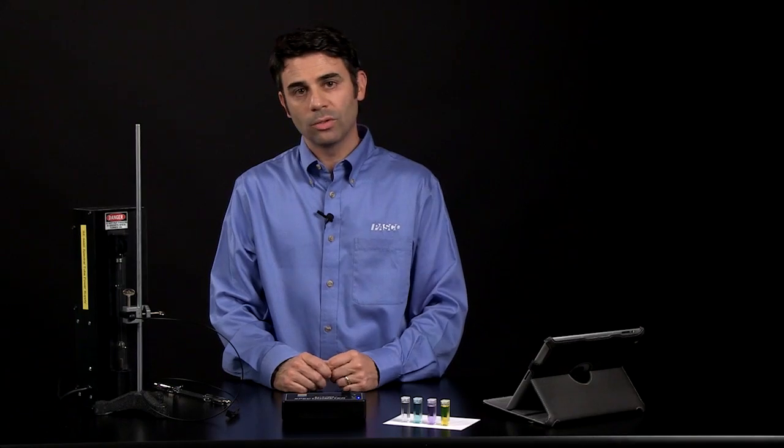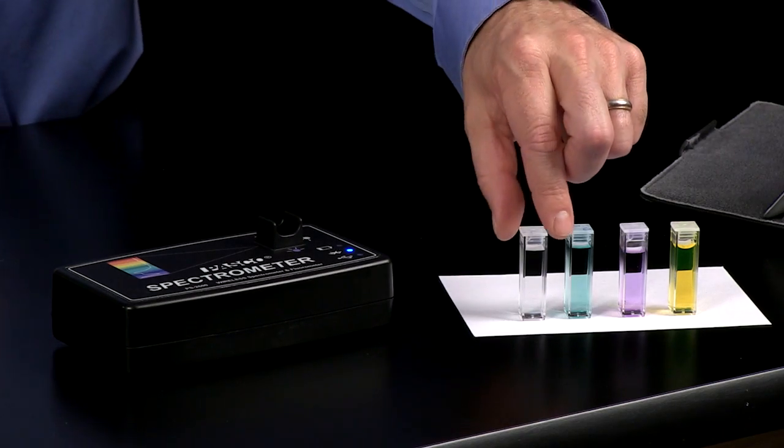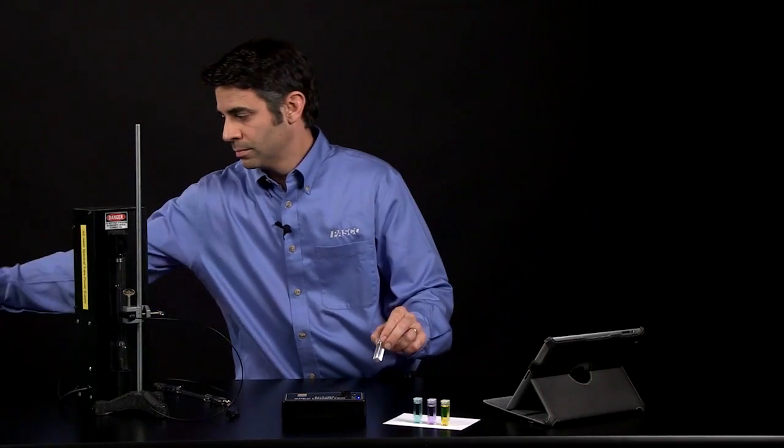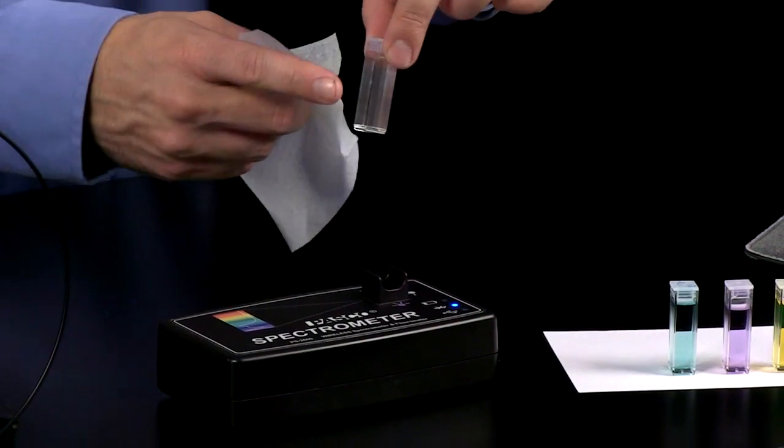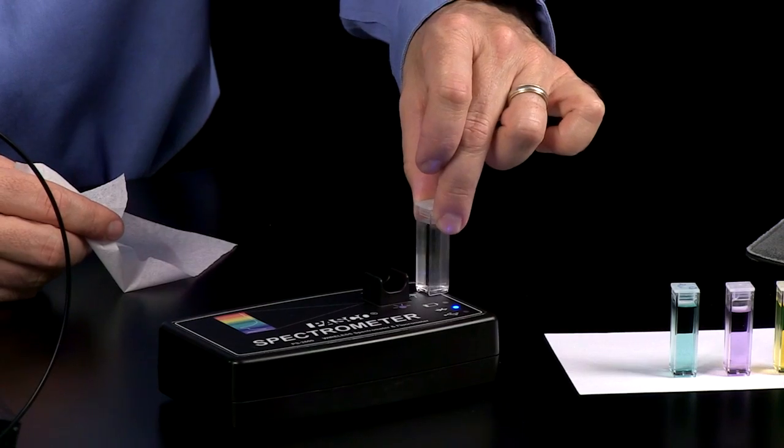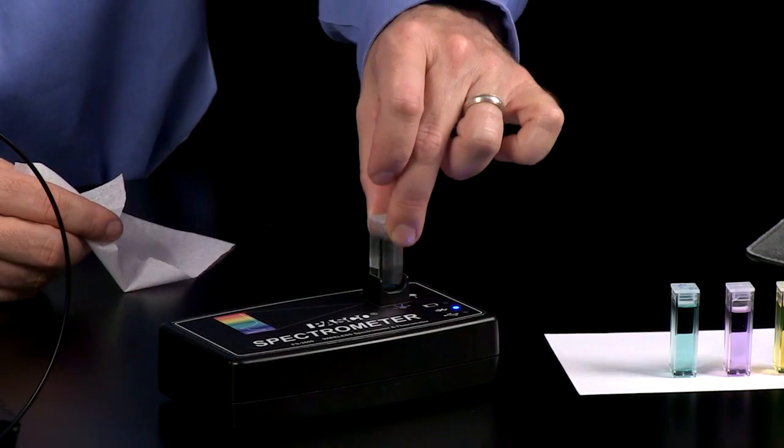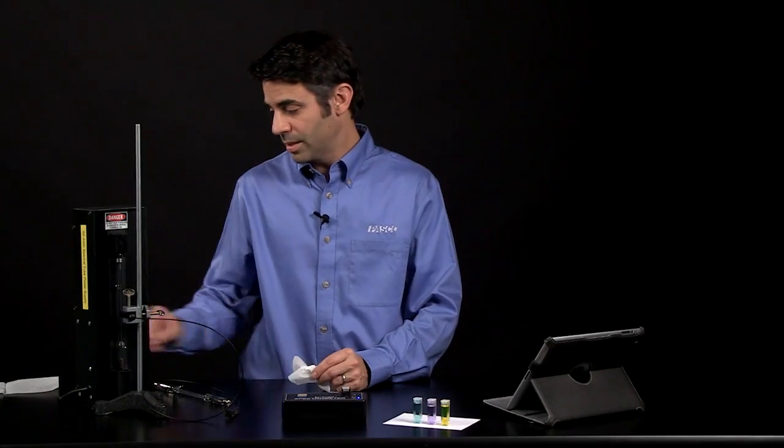Before I do anything, I'm going to need to blank the spectrometer. I'm going to take my solvent, cuvette containing my solvent. I'm going to put it in so that the clear sides are facing the detector and the light source. Again, it will be a nice snug fit.